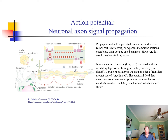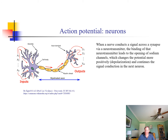Saltatory conduction allows for transmission of signals along myelinated neurons to be much faster than if they had to depolarize an adjacent portion of membrane as the signal progressed through the axon. When you get to the end of a neuron, a different mode of transmission is used: at the axon terminal, transmission occurs via a neurotransmitter, which diffuses across a synapse — either to a dendrite of another nerve or to an end organ or muscle — and normally opens sodium channels, as in the neuromuscular junction.